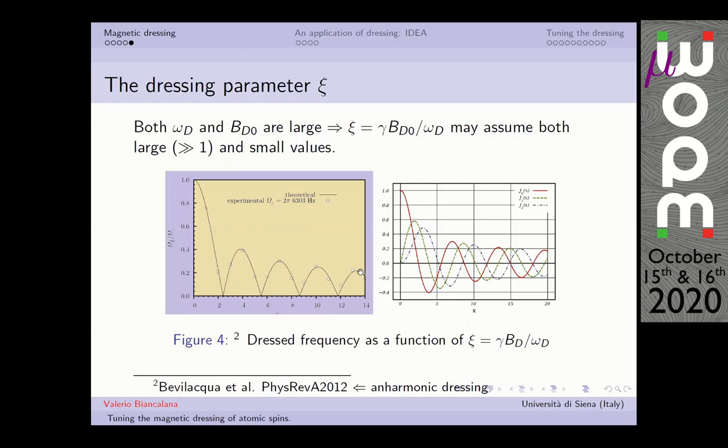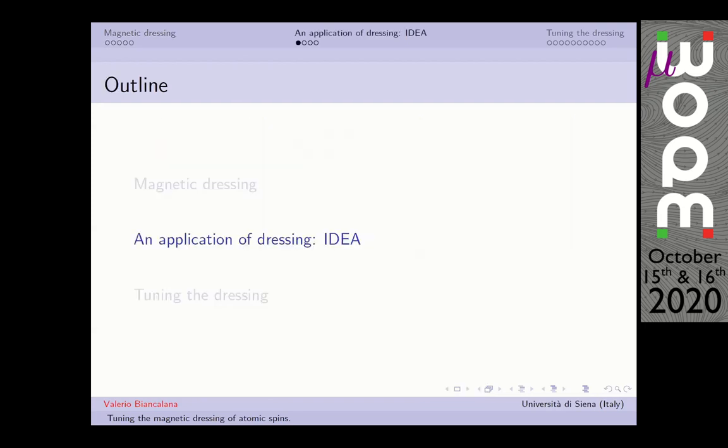This is a comparison of theory and experimental results. These are the well-known Bessel functions, and this is the measured Larmor frequency. As you see, we can change BD, the amplitude of the dressing field, and its frequency. They're both large, so the ratio can be smaller or larger, so we can access different kinds of conditions, and the theory perfectly matches with the experiment.